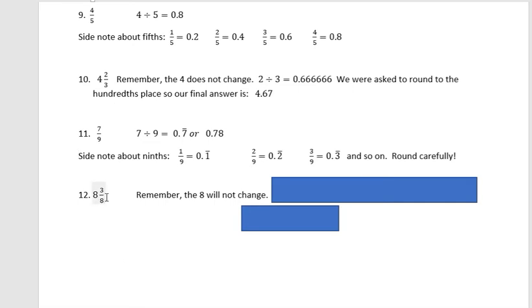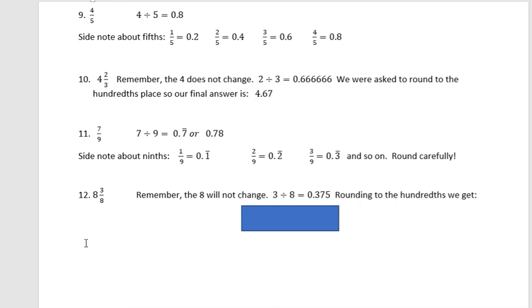And eight and three eighths, the eight will not change. We're going to divide the three by eight and get 0.375. But we have to round that to the hundredths, which gives us 8.38. I did go through this pretty quickly, but the process should not be that difficult for you. And I hope you have a fantastic day.